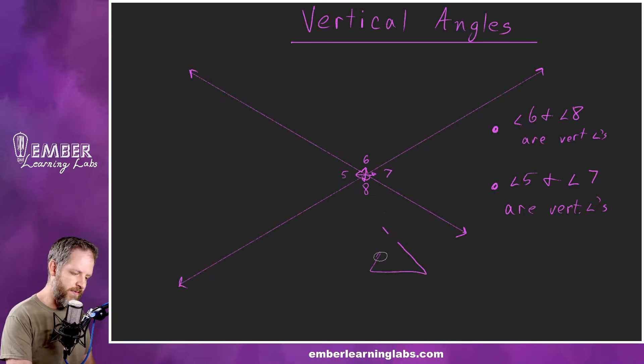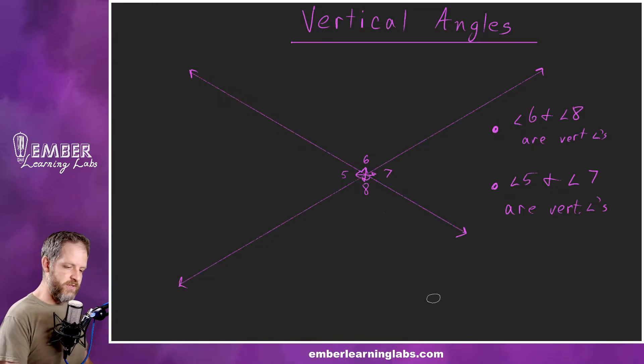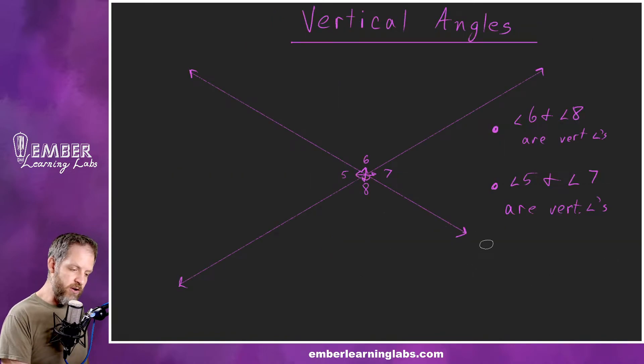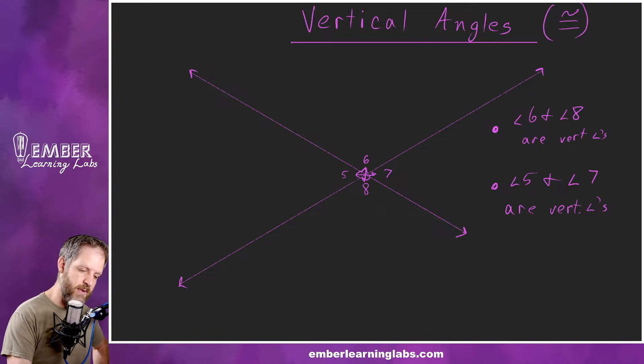Before I move on, linear pairs have the relationship that they are supplementary, which we'll define here in just a second. They add up to 180 degrees. Vertical angles, you may be able to tell just looking at this example, vertical angles are congruent. That is how they are related. So in this particular picture, angle six is congruent to angle eight, angle five is congruent to angle seven. If they are congruent this way and this way, then we've got perpendicular lines because they're all going to be 90.